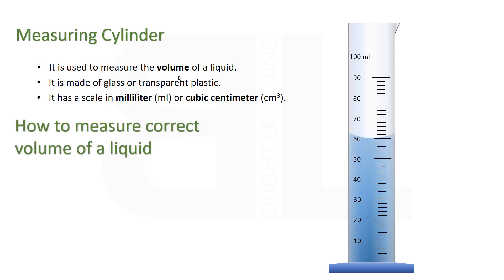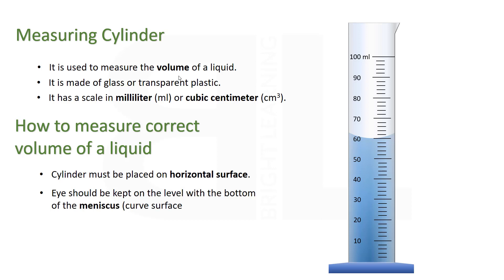How to use a measuring cylinder? The cylinder must be placed on a horizontal surface. The eye should be kept level with the bottom of the meniscus. The meniscus is the curved surface of a liquid.